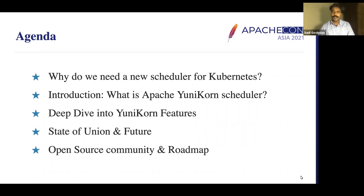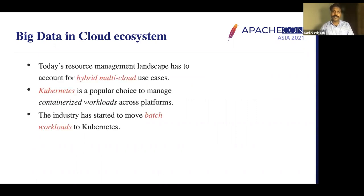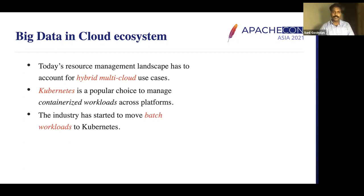Let's look at the first part: big data in the cloud ecosystem. In the resource management landscape of past decades, we were using Hadoop as one of the major big data platforms, with various types of workflows running in that ecosystem. In recent years we moved to cloud, and the same type of big data ecosystem exists there as well. Kubernetes is a popular choice to manage these kinds of workloads.